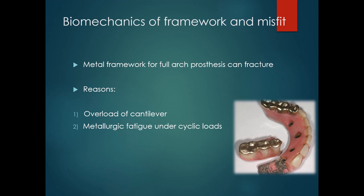Next is the biomechanics of framework and misfit. In implant prosthodontics, gold, gold alloys, and other metal alloys like cobalt-chromium have been traditionally used as gold standard materials for fabricating frameworks. They increase prosthesis stiffness, protecting implants from overloads and reducing the risk of technical complications. Later, titanium alloys and zirconia were introduced as alternative materials — highly biocompatible and preventing galvanic corrosion, which is a typical disadvantage of non-noble metal alloys.